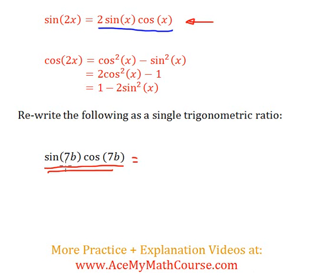Let's rewrite sine 7b cos 7b as a single trig ratio using double angle identities. Looking at 2 sine x cos x, that's the closest thing we have to sine 7b cos 7b.